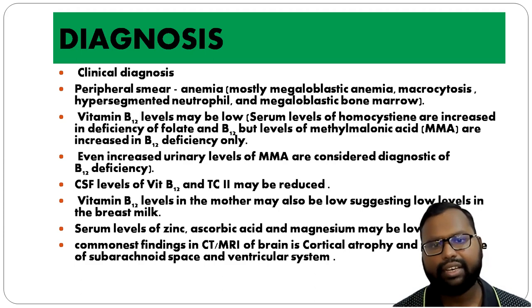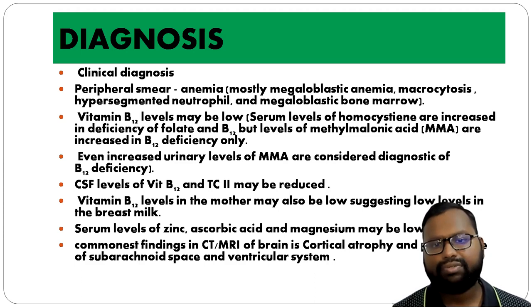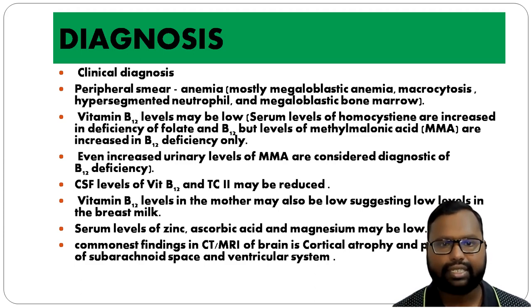The commonest finding on CT and MRI is cortical atrophy, with prominence of the subarachnoid space and ventricular system.